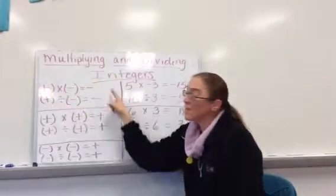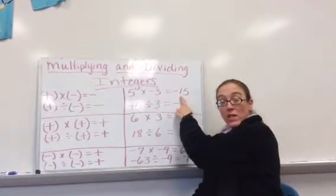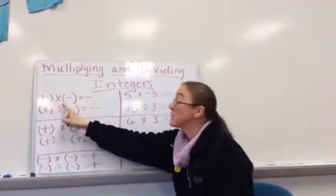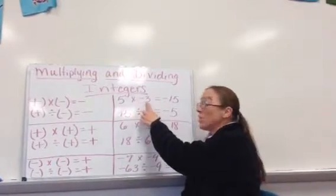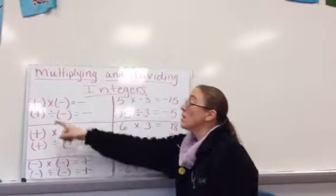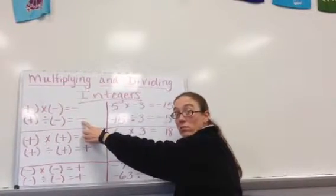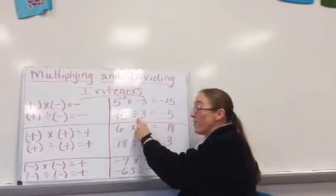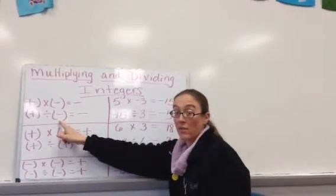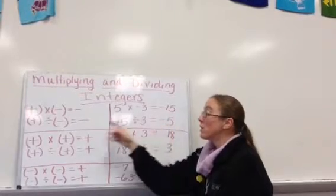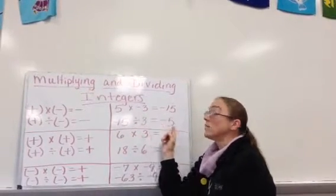If we use this with numbers: 5 times negative 3 is negative 15 — a positive times a negative is a negative. A positive divided by a negative also gives you a negative number. Negative 15 divided by 3 is negative 5, so again a positive divided by a negative gives you a negative.